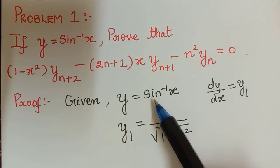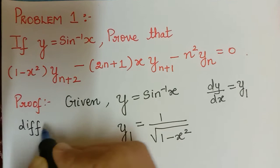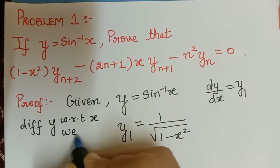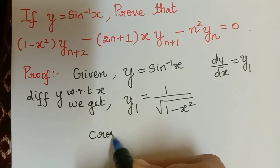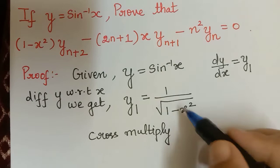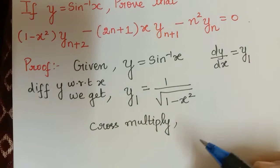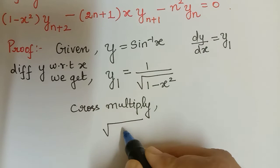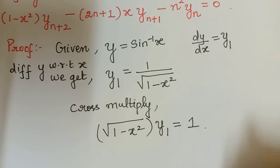We have already seen the differentiation formula: when sin inverse of x is differentiated we get 1 by square root of 1 minus x squared. So differentiating y with respect to x we get y₁ equal to 1 by square root of 1 minus x squared. Now we will cross multiply: we multiply square root of 1 minus x squared along with y₁ to get square root of 1 minus x squared multiplied with y₁ equal to 1.